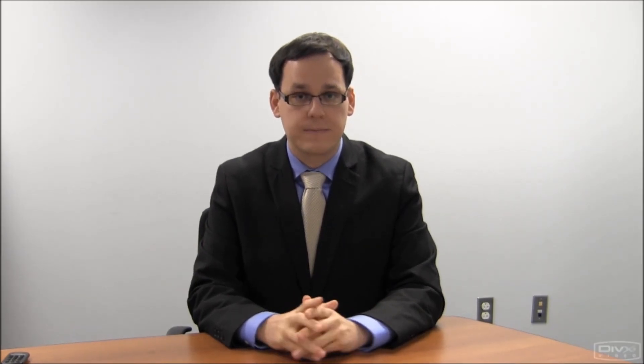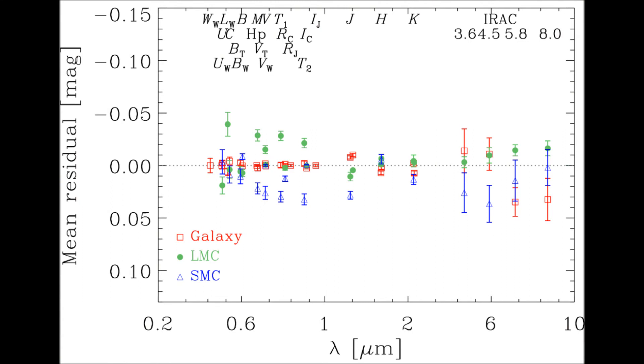We investigate the effect of composition on the Cepheid parameters. Based on stellar atmosphere models, we predict the biases in distance, reddening and temperature determinations due to metallicity. We quantify the metallicity signature expected in our fit residuals. This figure shows the observed residuals as a function of wavelength for the three individual galaxies. We see clear differences between the individual galaxies which are compatible with these predictions. The residuals are quite small because the effects of metallicity are largely compensated for by changes in the distance or radius, reddening and temperature.